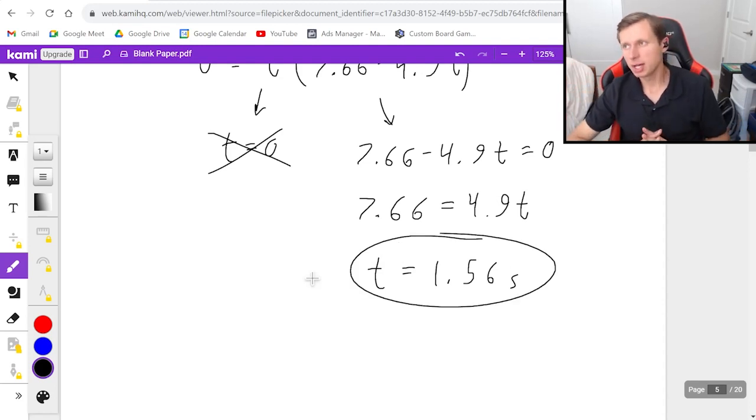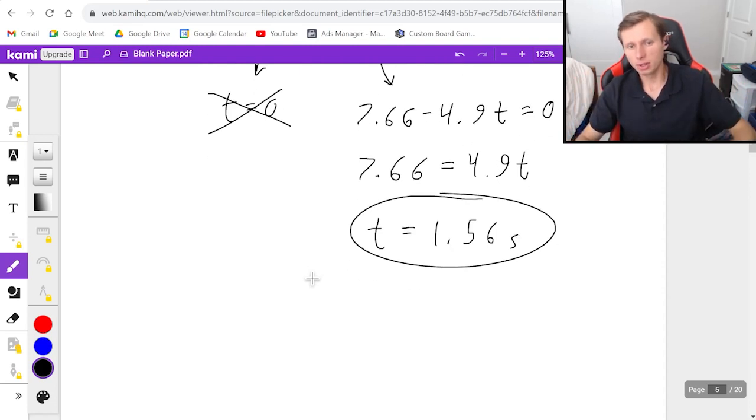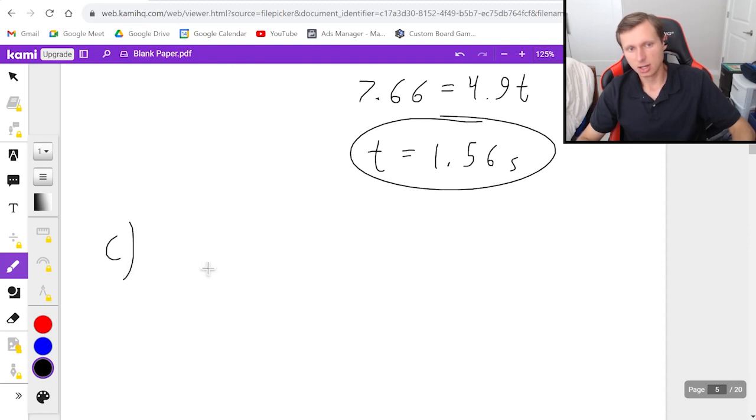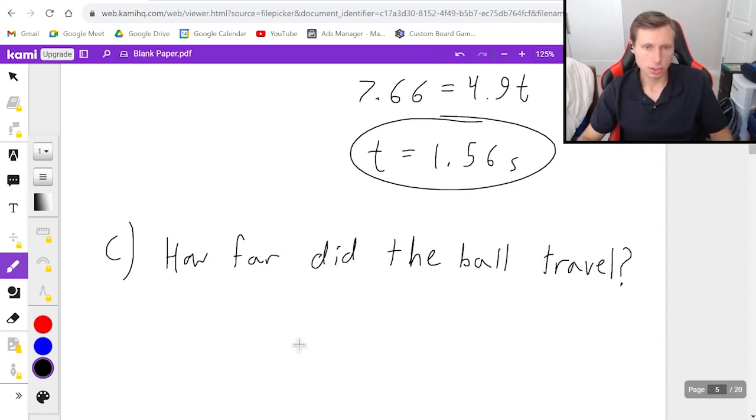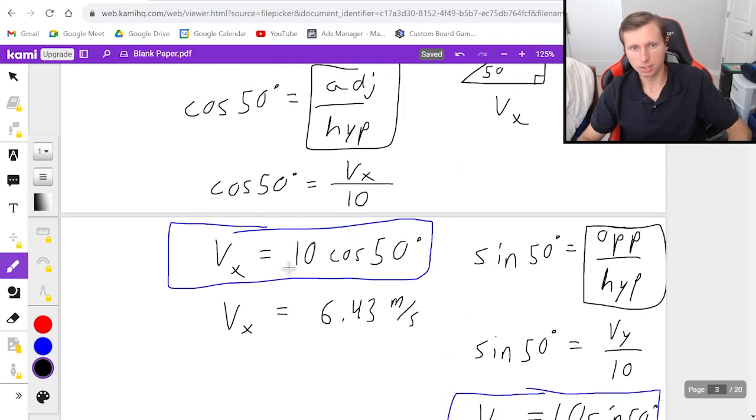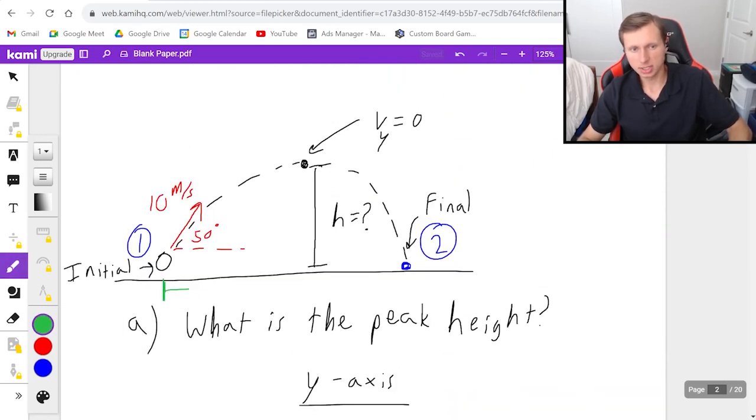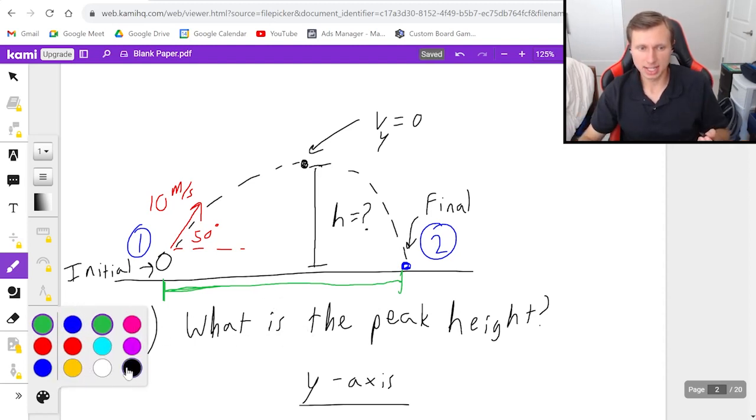You may notice we have not needed the x-axis at all yet, but we will for part c. For part c, I'm going to ask you how far did the ball travel? And so if we look back at our picture, I'm basically asking what's this distance right here in green. And to do that, we certainly need the x-axis.